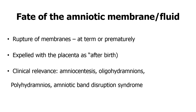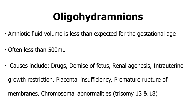There is also what we call amniotic band disruption syndrome. Oligohydramnios is where you have too little amniotic fluid — less than expected for gestational age, usually less than 500 milliliters. The causes include teratogenic drugs, demise of the fetus resulting in no urine being produced, renal agenesis with no urine being produced, intrauterine growth restriction, placental insufficiency meaning no fluid diffusion from the maternal side, premature rupture of membranes, and chromosomal abnormalities such as trisomy 13 (Patau syndrome) and trisomy 18 (Edwards syndrome).